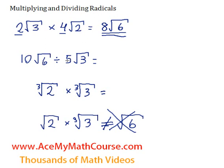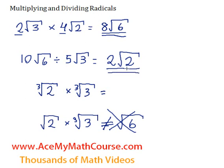So we can divide and combine these radicals. The rule for division of radicals is very similar to multiplication. For 10 root 6 divided by 5 root 3: 10 divided by 5 is just 2. Then inside the square root, 6 divided by 3 is just 2. So we divide the numbers outside the square root, then the numbers inside, and we end up with 2 times the square root of 2.